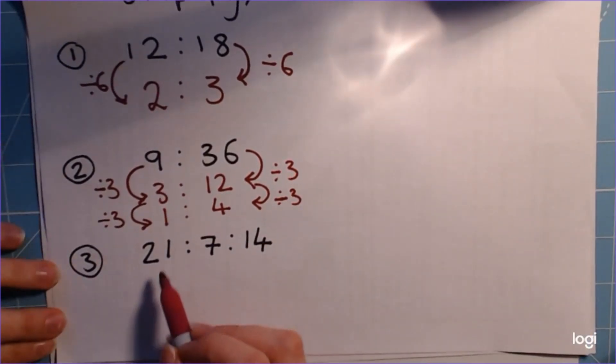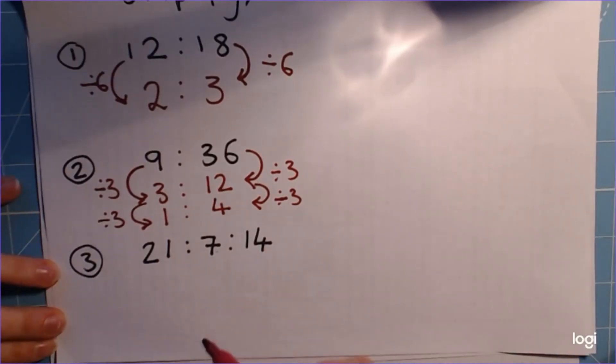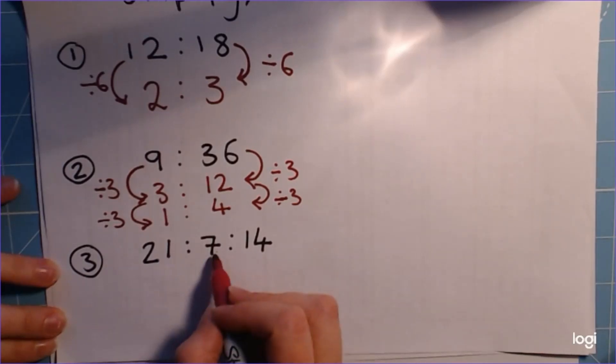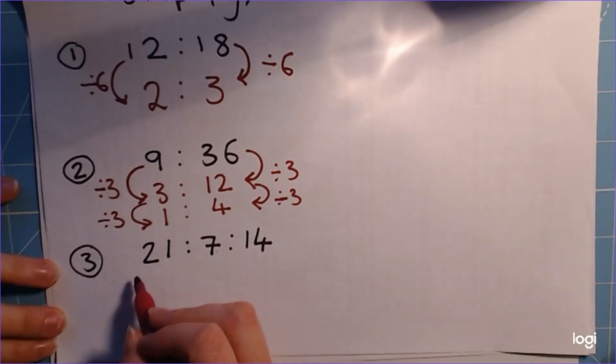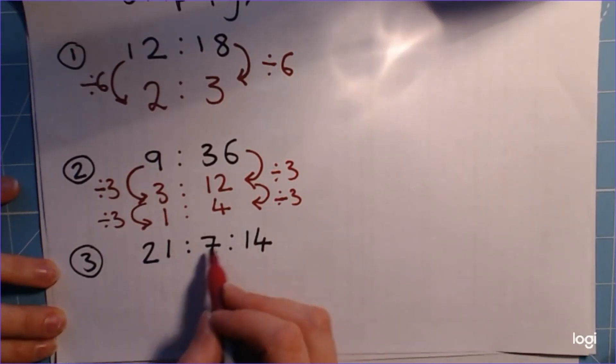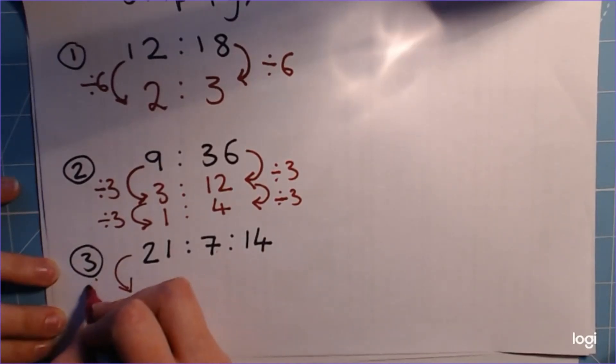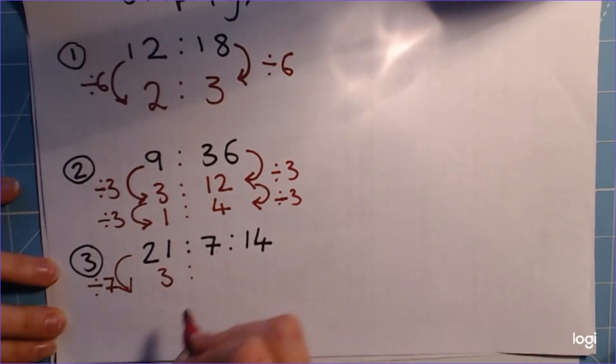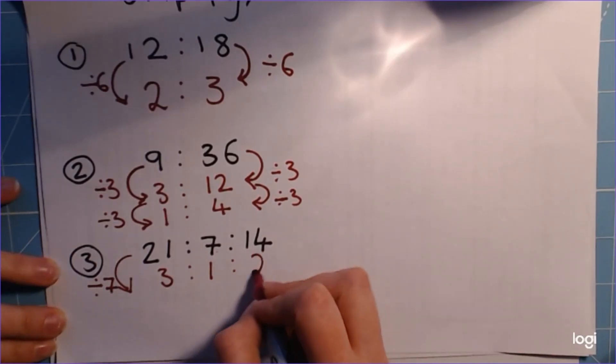And this one here is a little bit different because it's got 3 parts to the ratio, but that's okay. We treat it in the exact same way. So we're looking for the highest common factor of each one of these three numbers. So the highest common factor is 7 because they're all in the 7 times table. So we can divide by 7. I'm just going to write it once this time. Divide by 7, so we get 3, 7 divided by 7 is 1, and 14 divided by 7 is 2.